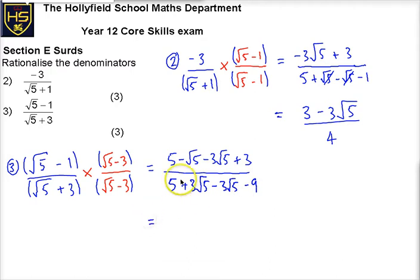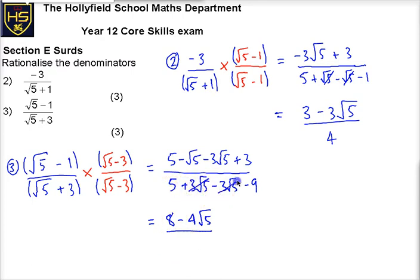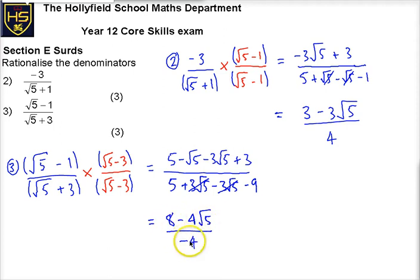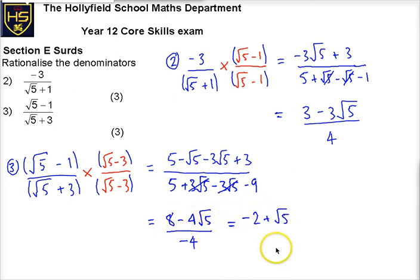So let's go underneath a little bit. On the top I get 8 and then minus 4 root 5. On the bottom, the root 5 terms cancel — which is why I chose my red fraction as it was — and I get 5 minus 9, which is minus 4. Now we don't really like having a negative number on the bottom; we prefer to have a positive denominator. So we're just going to divide through — this divides by minus 4, and this divides by minus 4 — so we're going to get minus 2 from here, and we're going to get plus root 5.